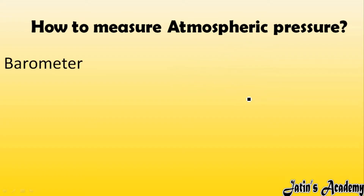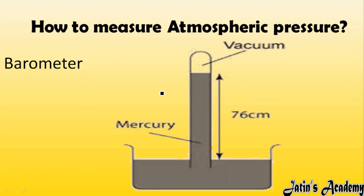Now, how to measure atmospheric pressure? The instrument named barometer is used to measure atmospheric pressure. In a barometer we are using mercury. The diagram of a barometer has two parts: first, a tube, and second, a trough or beaker.